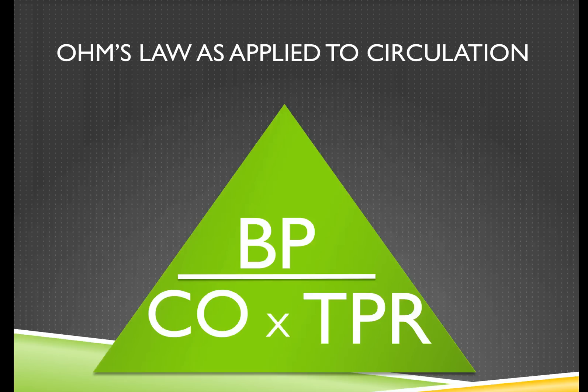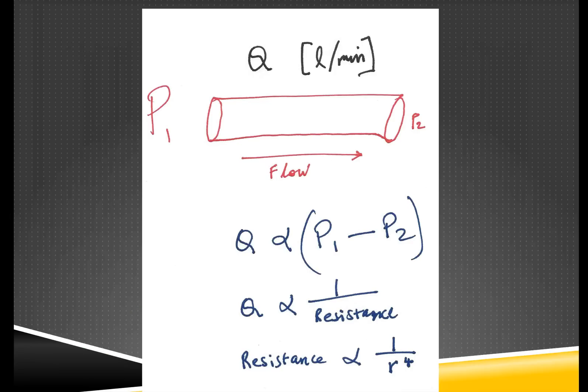This is a diagram essentially illustrating how the flow measured in this case in liters per minute is proportional to the difference between P1 and P2. Flow is also inversely proportional to the resistance. The higher the resistance, the less the flow. This corresponds to the fourth power of the radius, so resistance relates to the fourth power of the radius. In other words, a very small reduction in radius will have a profound effect on the resistance.